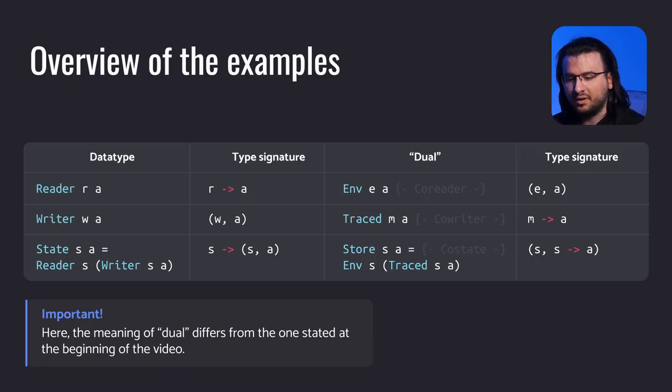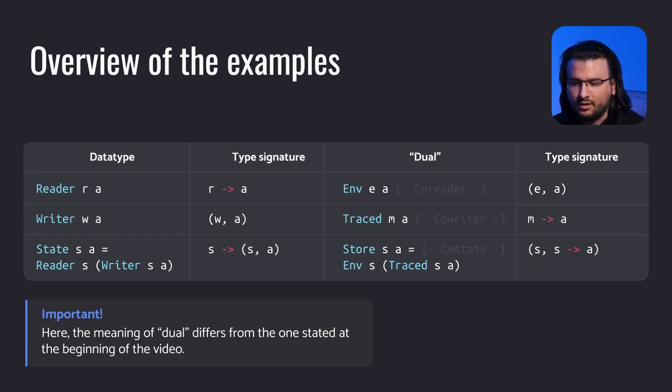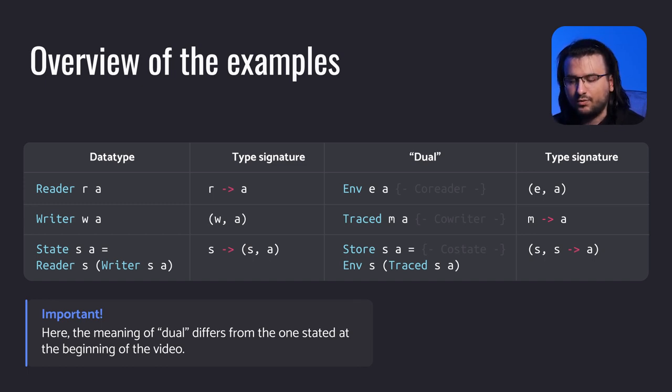Now, onto some examples. The table in front of you is split into two parts. To the left are the three classic monads — reader, writer, and state — with their type signatures shown in the second column. To the right are the comonads we're going to tackle: env, traced, and store, which are also called co-reader, co-writer, and co-state respectively. It is important to clarify that the exact notion of duality here somewhat differs from the one stated at the beginning of the video, involving some in-depth category theoretical concepts which we will not be covering today.